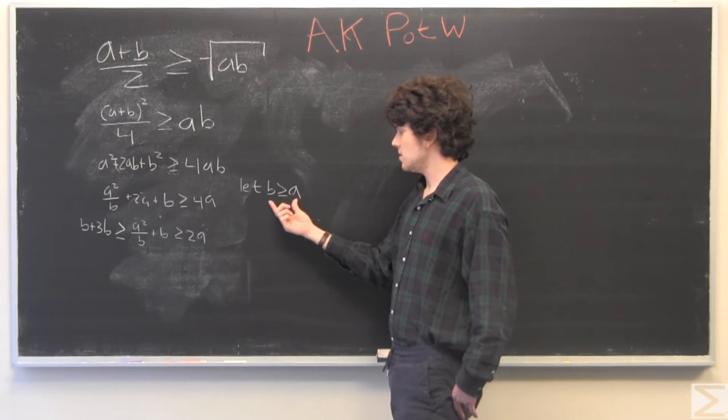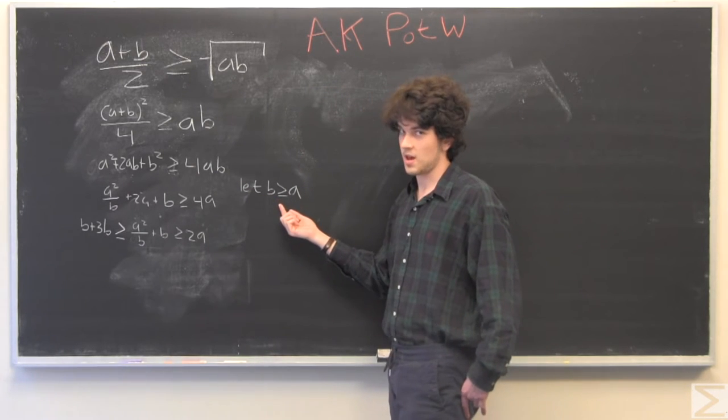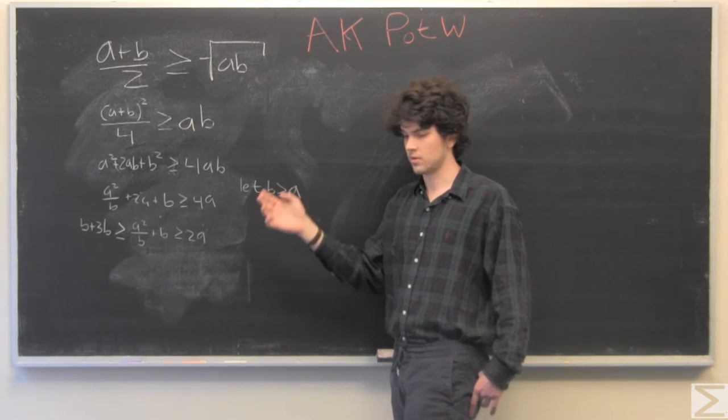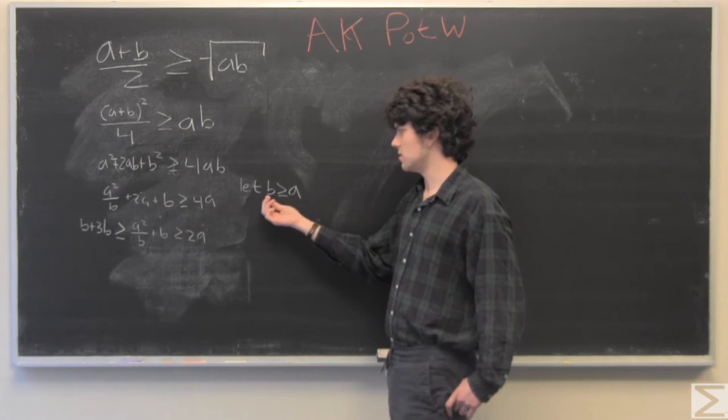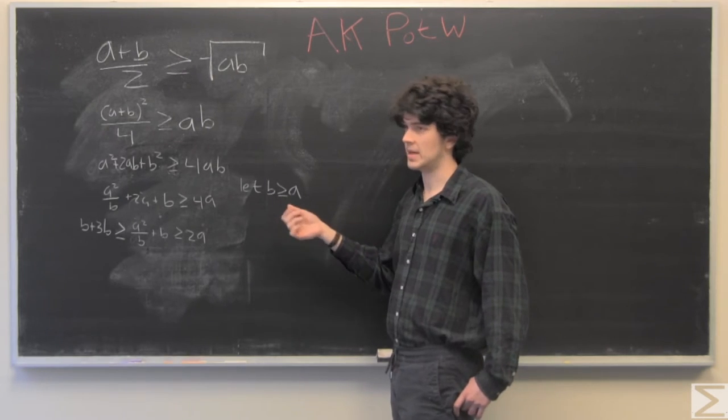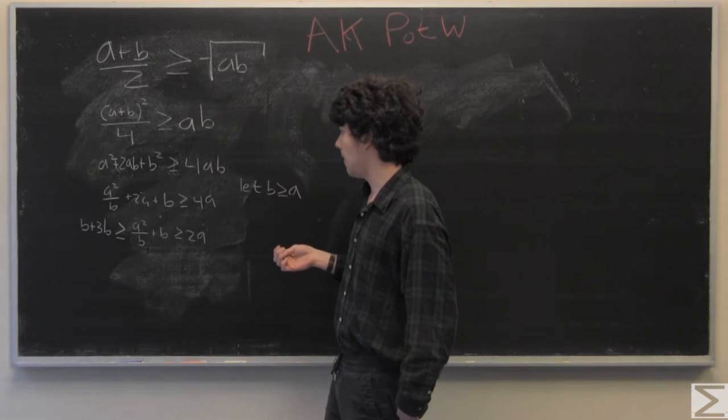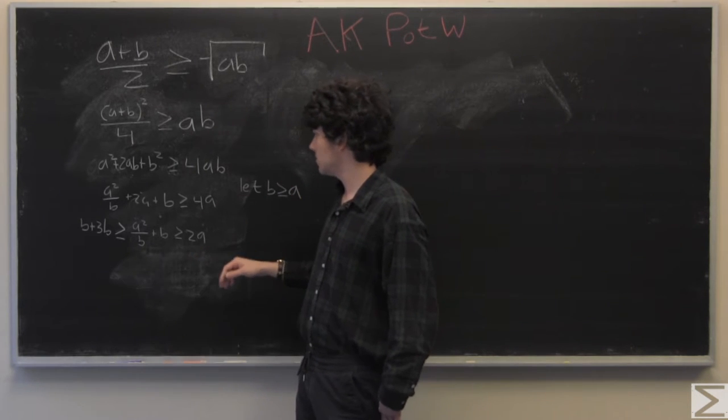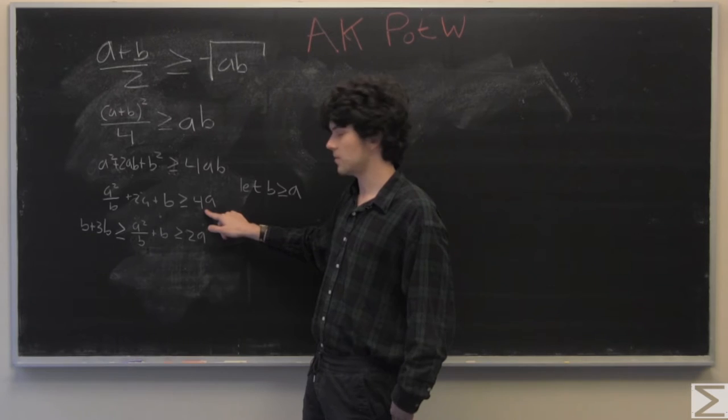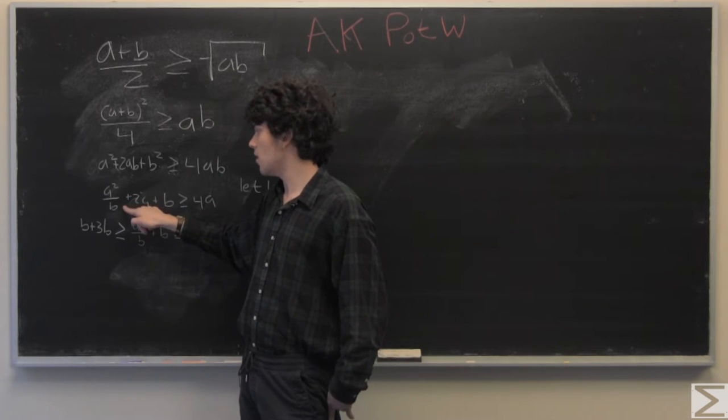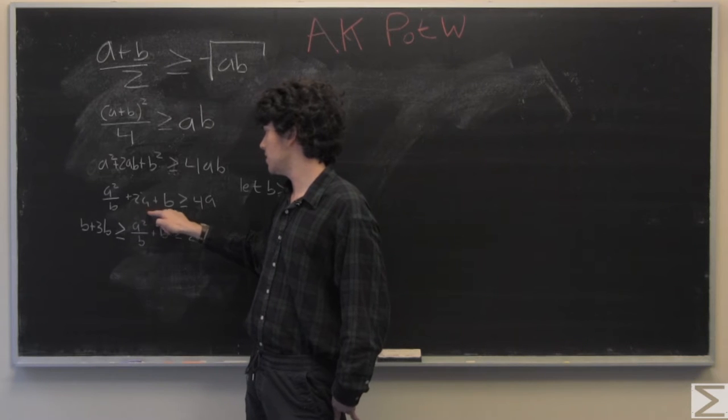And then we're going to let b be greater than or equal to a since we're looking at an ordered set of numbers. So this is true no matter what b and a we pick, which is good because they're arbitrary numbers. And divide everything by b.